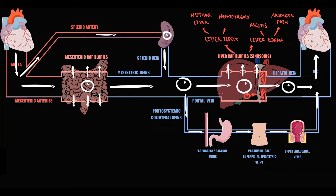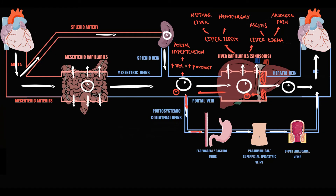The backup of blood due to obstruction in liver sinusoids causes accumulation of blood inside the portal vein. With fluid accumulation, hydrostatic pressure inside the portal vein increases — and we call this increase in portal venous pressure portal hypertension. The combination of portal hypertension and obstruction in liver sinusoids forces a larger volume of blood into the portosystemic collateral vessels, also called portosystemic shunts. The more severe portal hypertension becomes, the higher the volume of blood entering the collateral vessels, and the more distended they become.